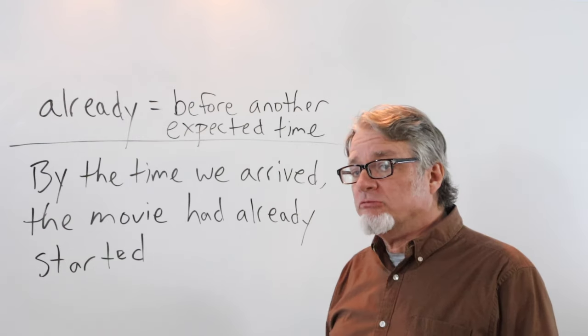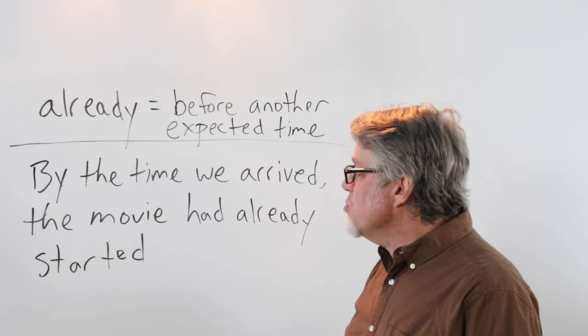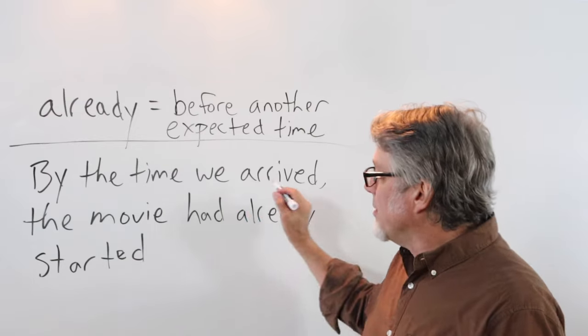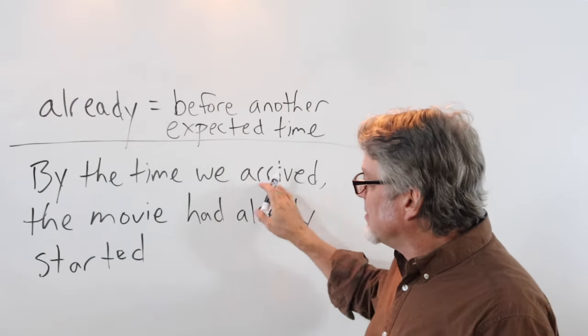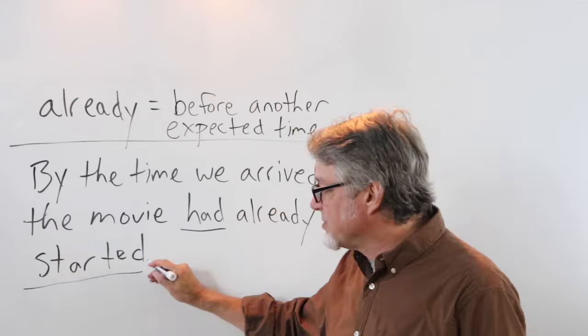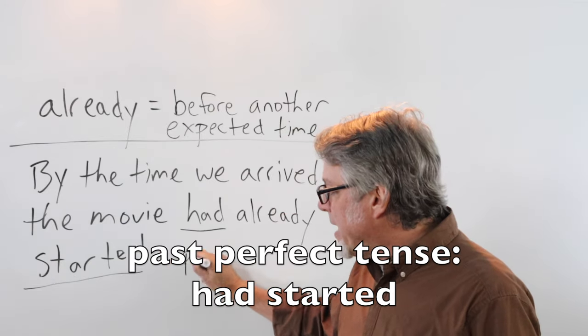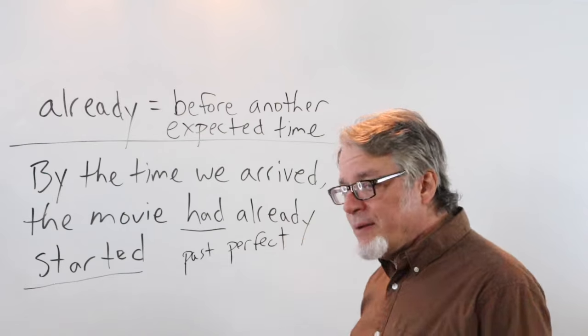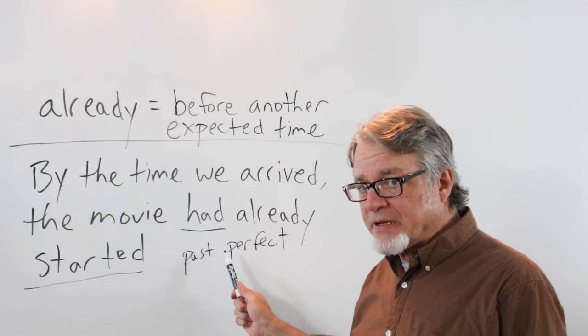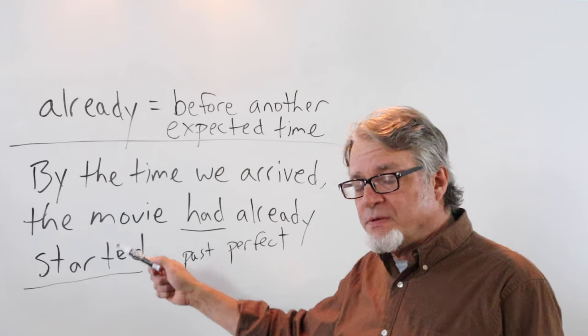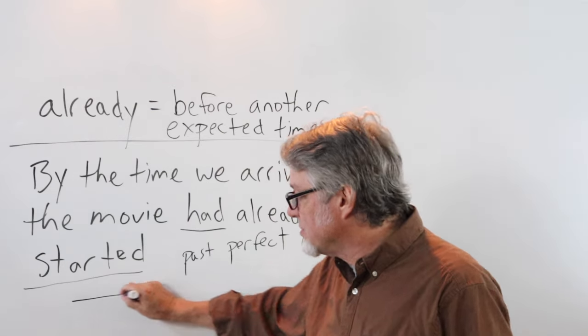By the time we arrived, the movie had already started. So, this happened in the past, and this also happened in the past, but this is in the past perfect tense. This is a very common use for the past perfect tense, to talk about something that happened before something else in the past.